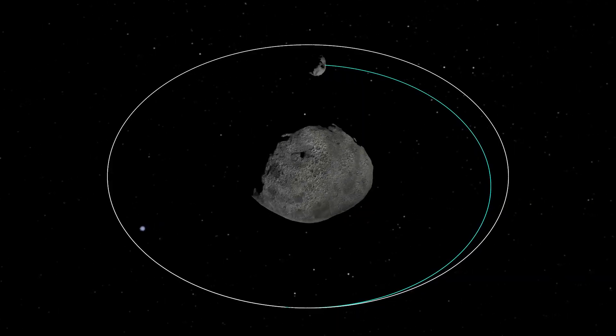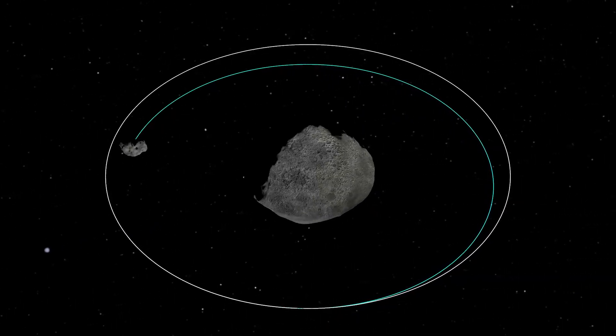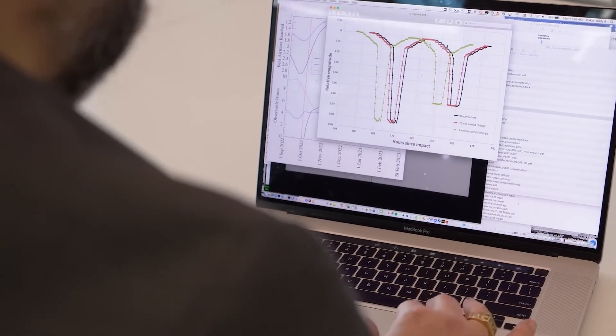As we watch from the Earth, Dimorphos will pass in front of Didymos and behind Didymos. What we will be doing with those images is measuring the brightness of Didymos in those images and looking at how that brightness changes. And those dips in brightness allow us to measure when these eclipses happen and measure the orbit period of Dimorphos.